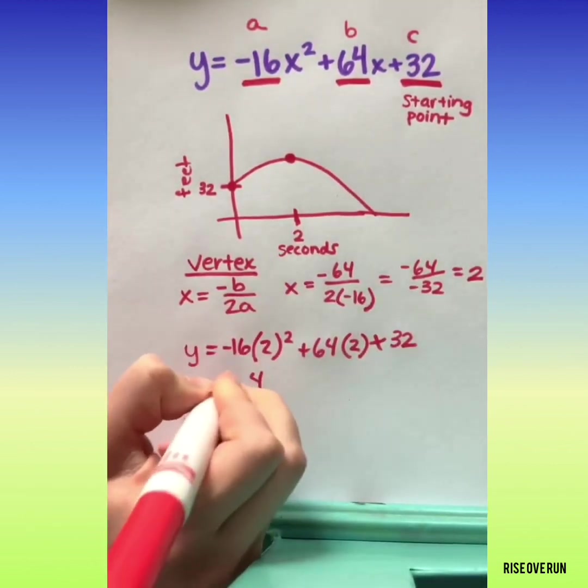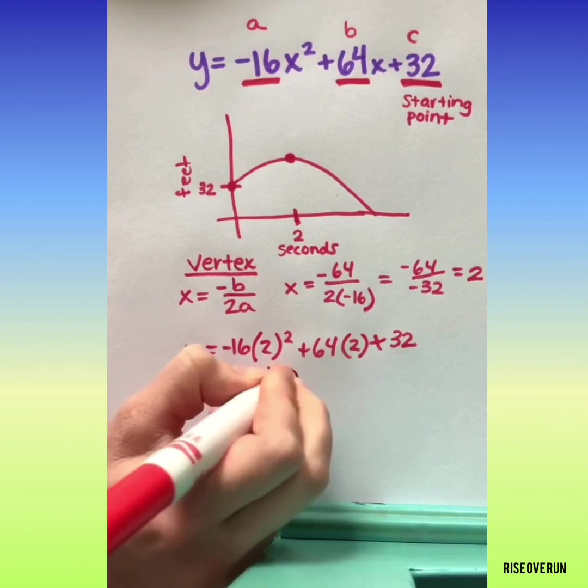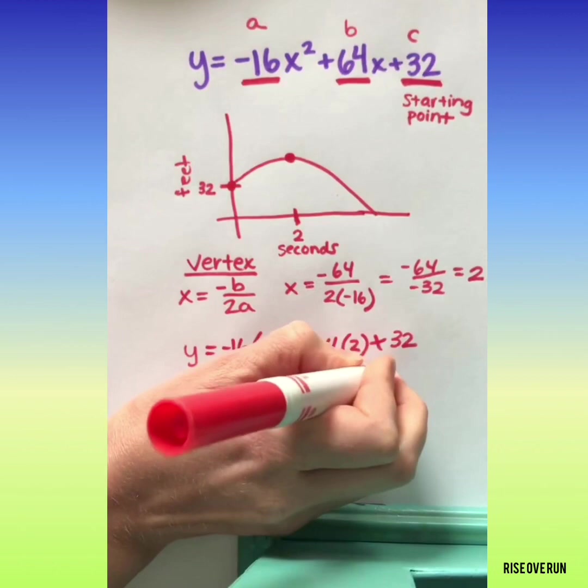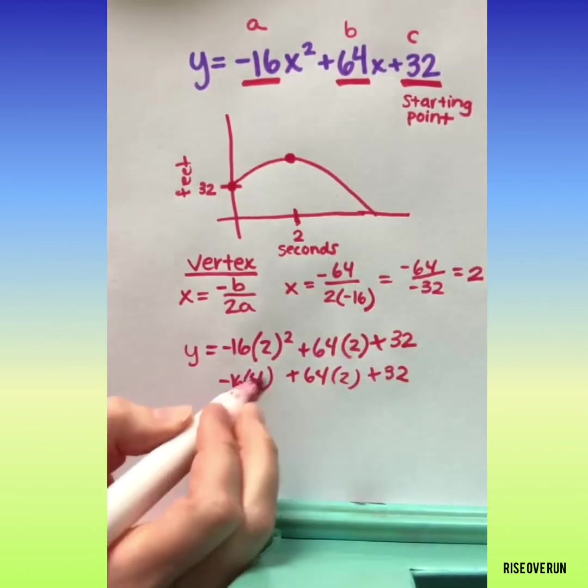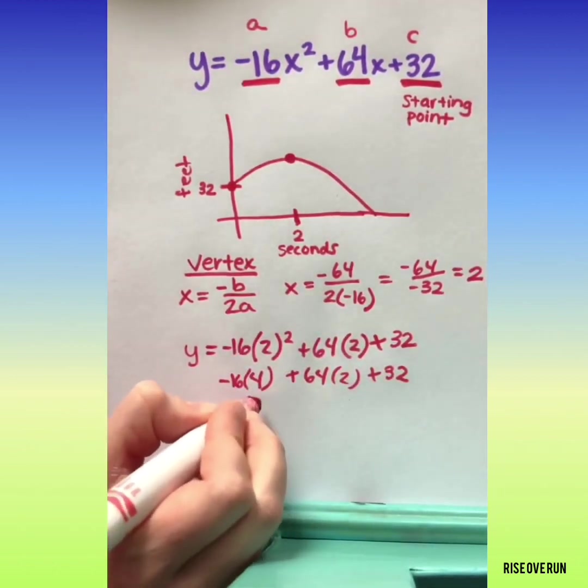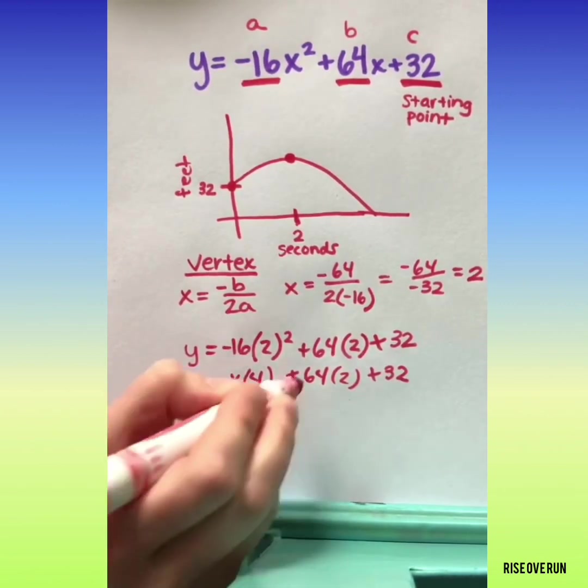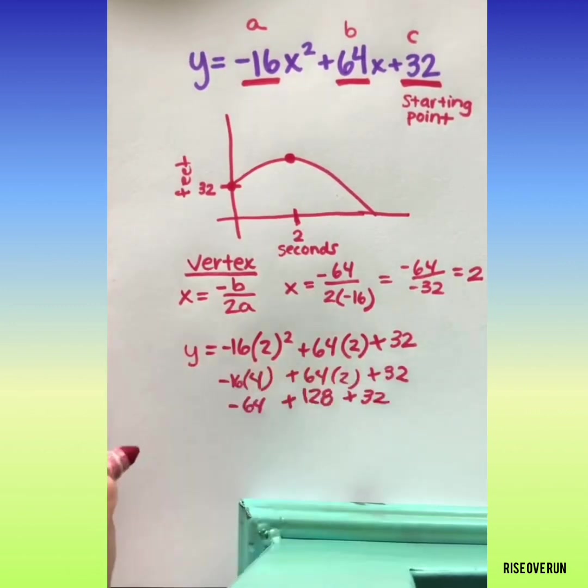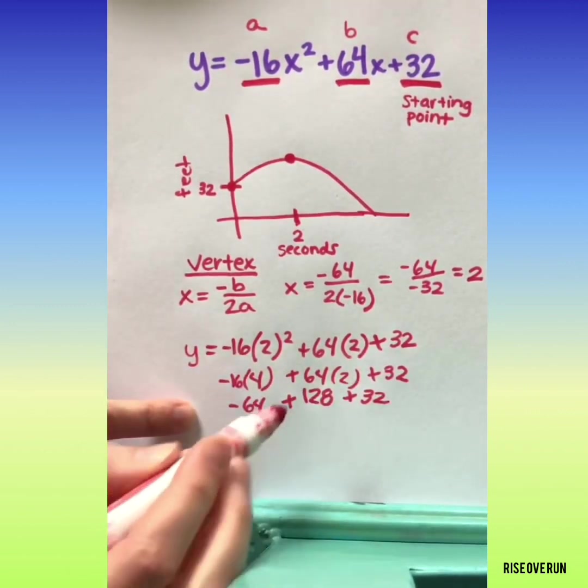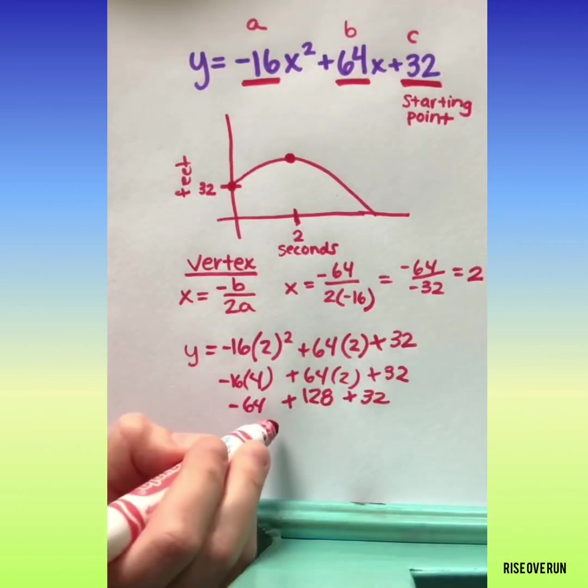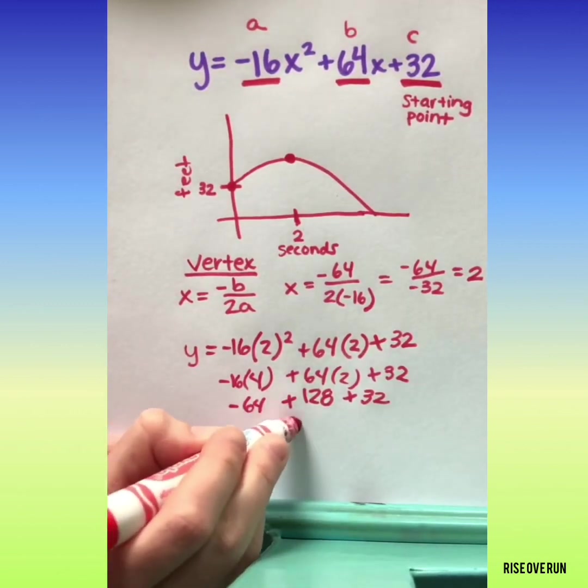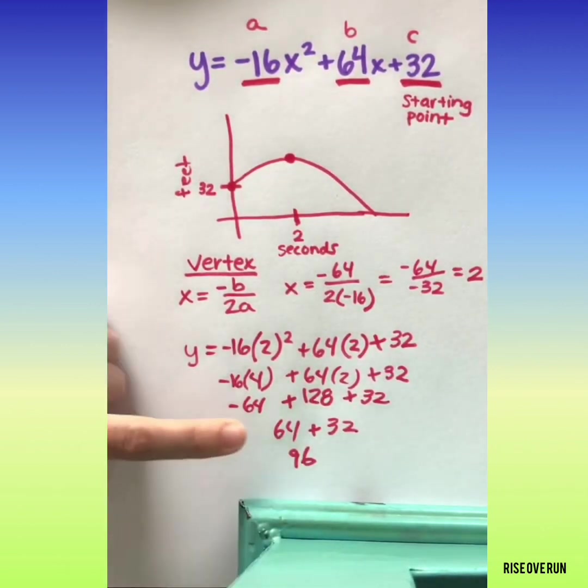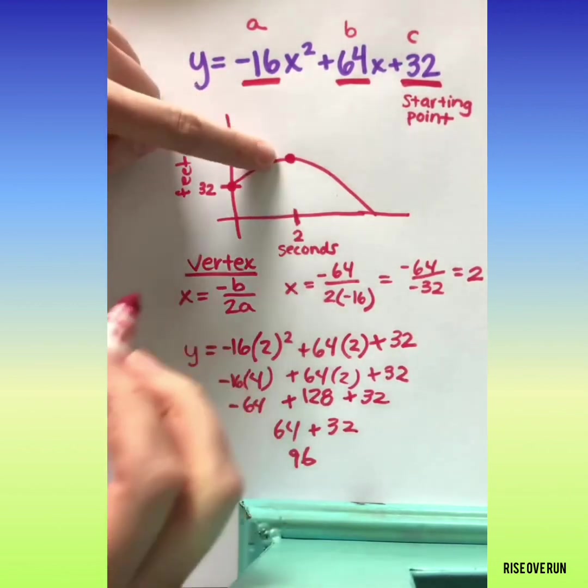Calculating: 2 squared is 4, 64 times 2 is 128, plus 128 plus 32 equals 96. That means the maximum height is 96 feet.